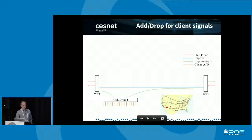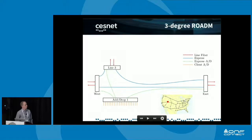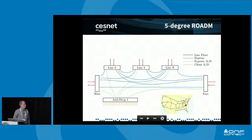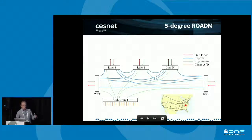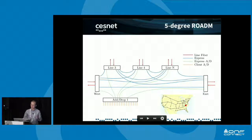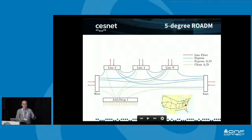We can scale the ROADM up by adding more directions — three, four, five-degree ROADMs or even higher. We can also increase redundancy. Each rectangular block represents a unit of function in the ROADM, often a card in a blade chassis. Whenever a device fails, you lose a certain function. If your topology has intersecting rings with some redundancy, losing one line card causes degradation but service can still be delivered.